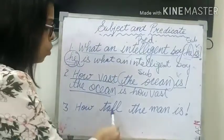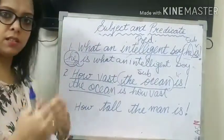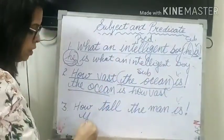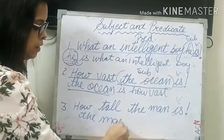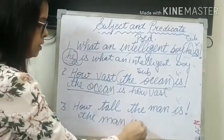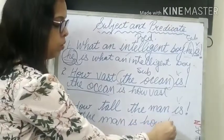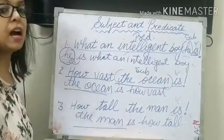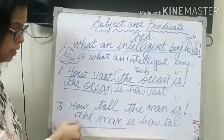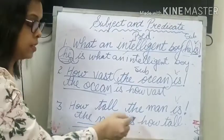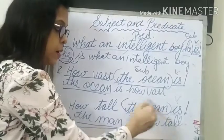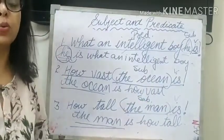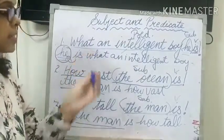Third sentence: 'How tall the man is!' Let's rephrase it again. The verb is 'is', so: 'The man is how tall.' If I ask the question — who is how tall? — the answer is 'the man is how tall'. So you are getting 'the man' as the answer. The man is the subject. In this way you can find out the subject in exclamatory sentences.